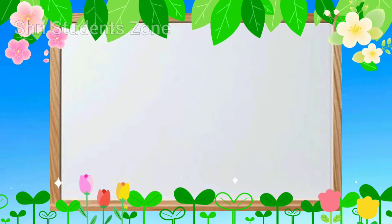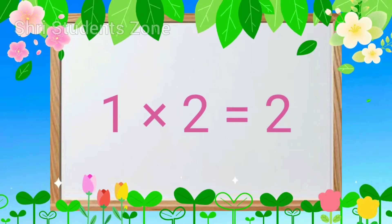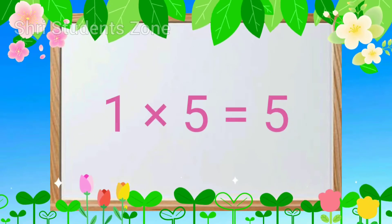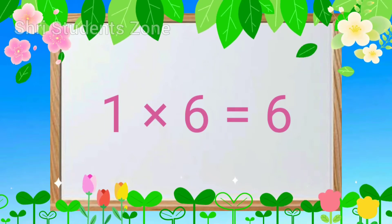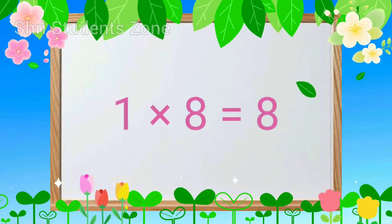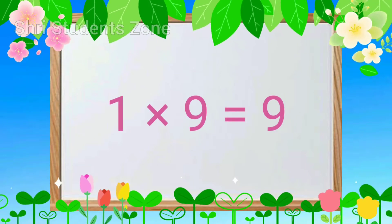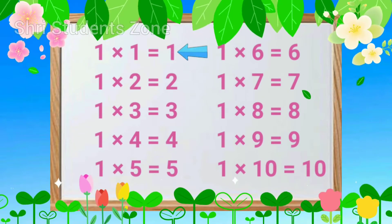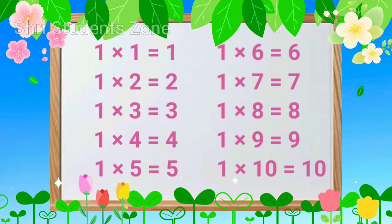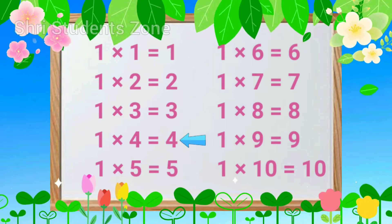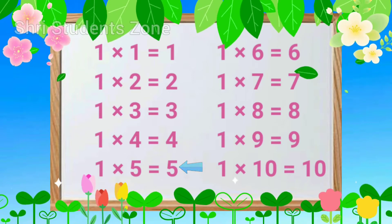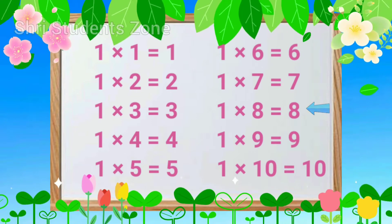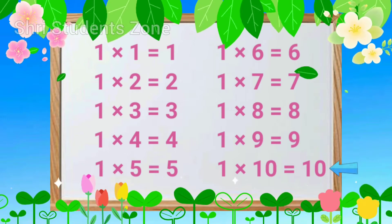Table of 1. Let's read. 1 1s are 1, 1 2s are 2, 1 3s are 3, 1 4s are 4, 1 5s are 5, 1 6s are 6, 1 7s are 7, 1 8s are 8, 1 9s are 9, 1 10s are 10.